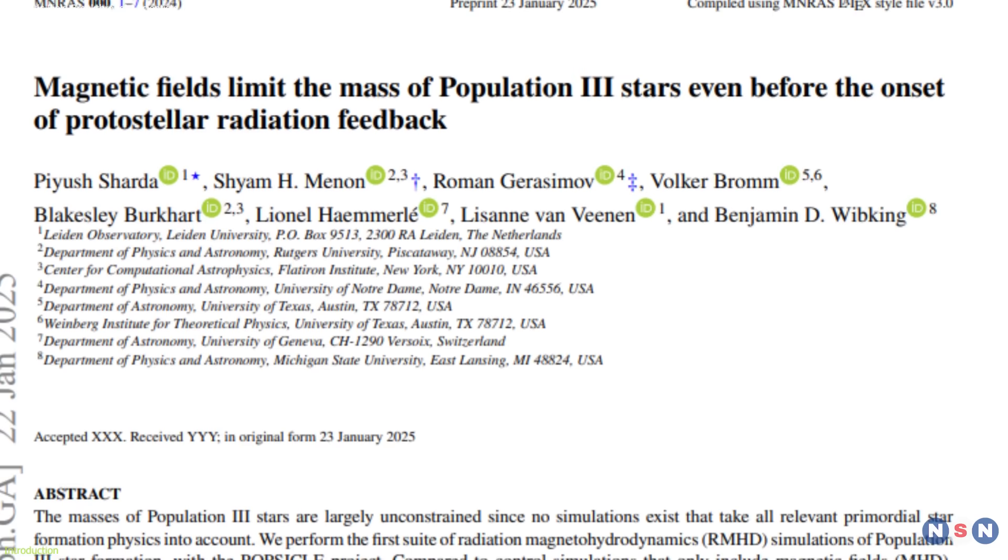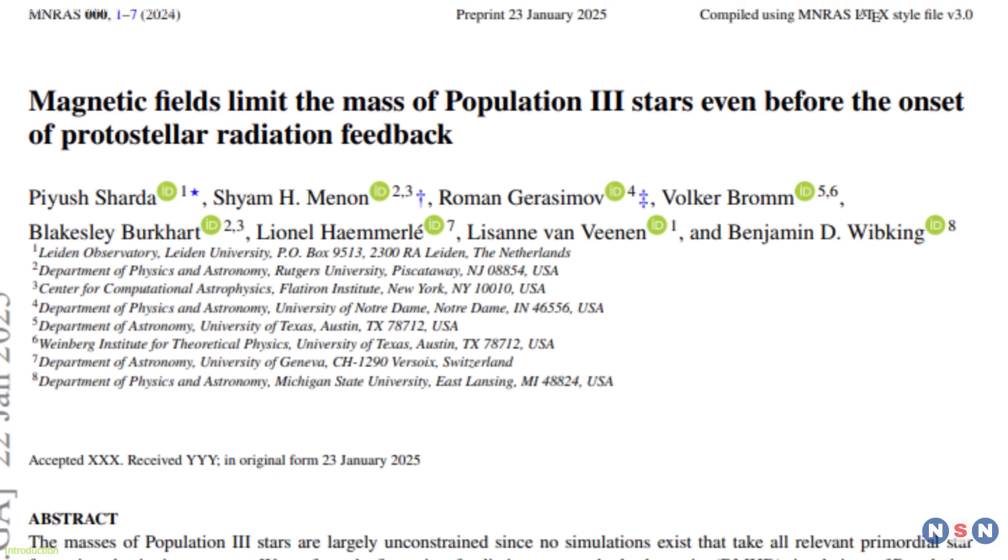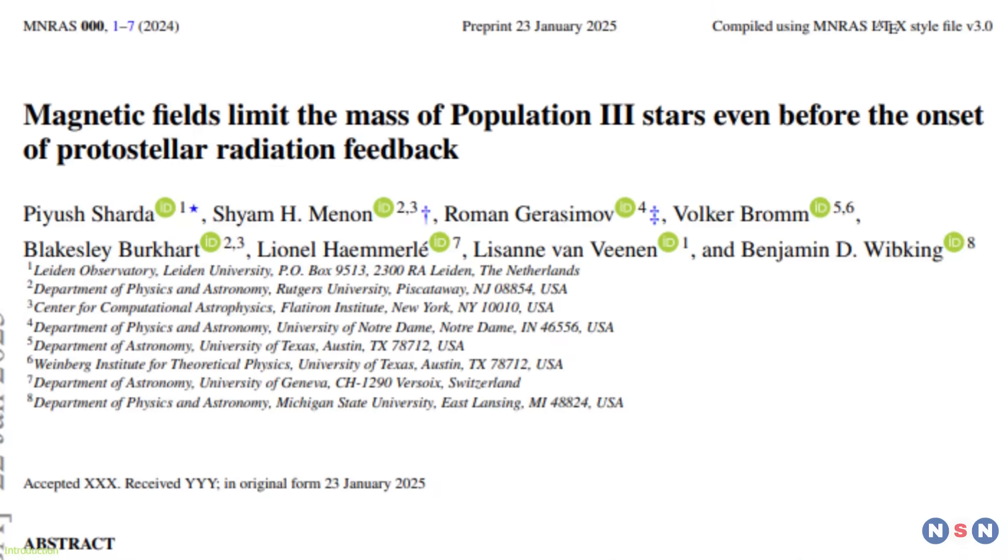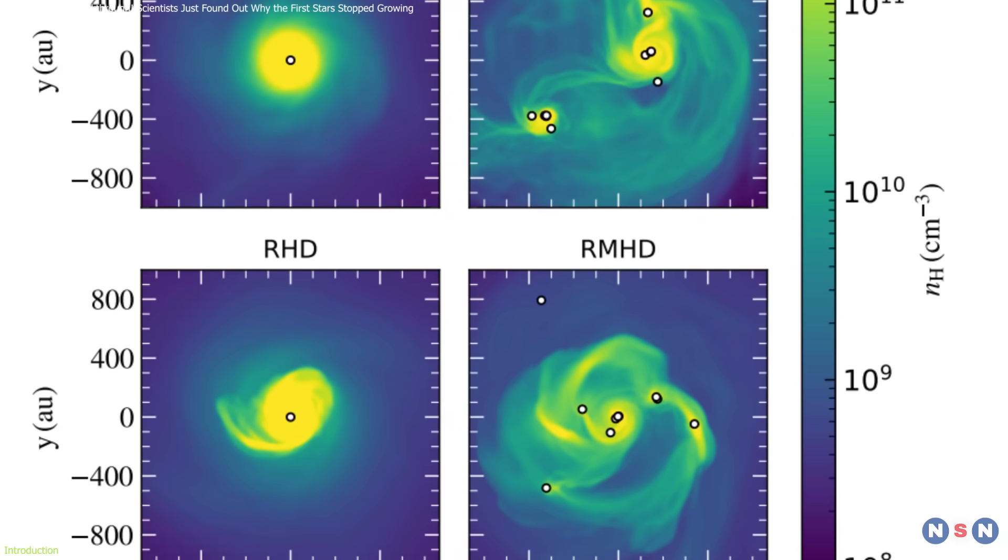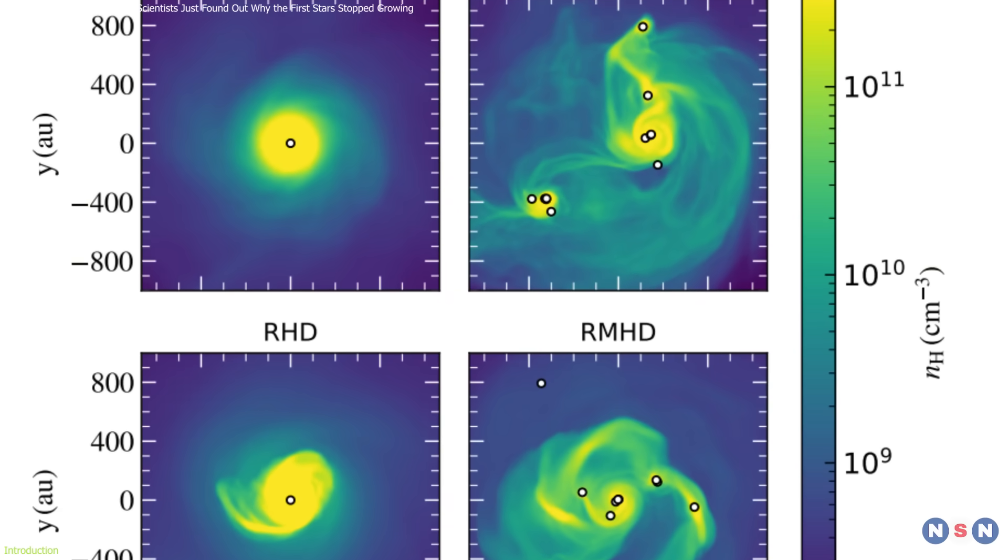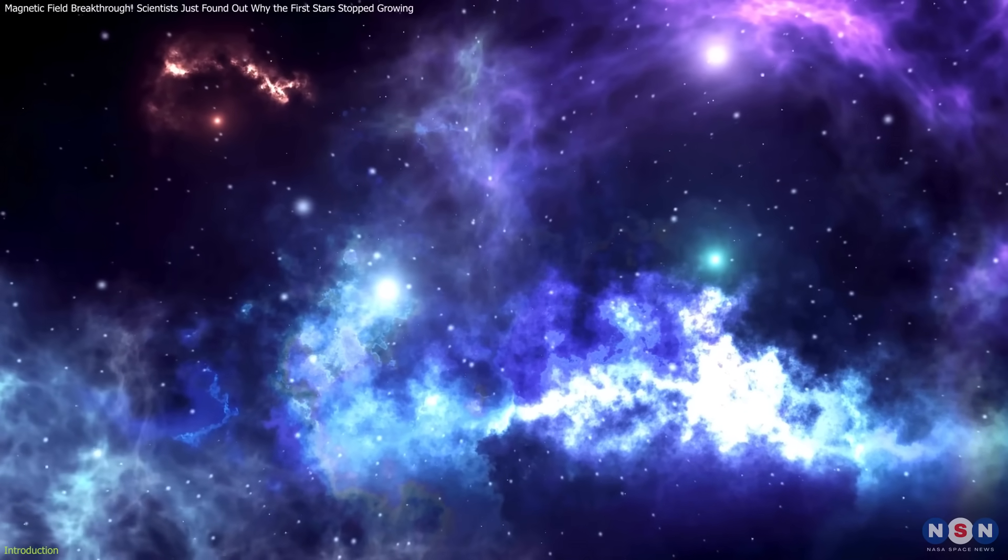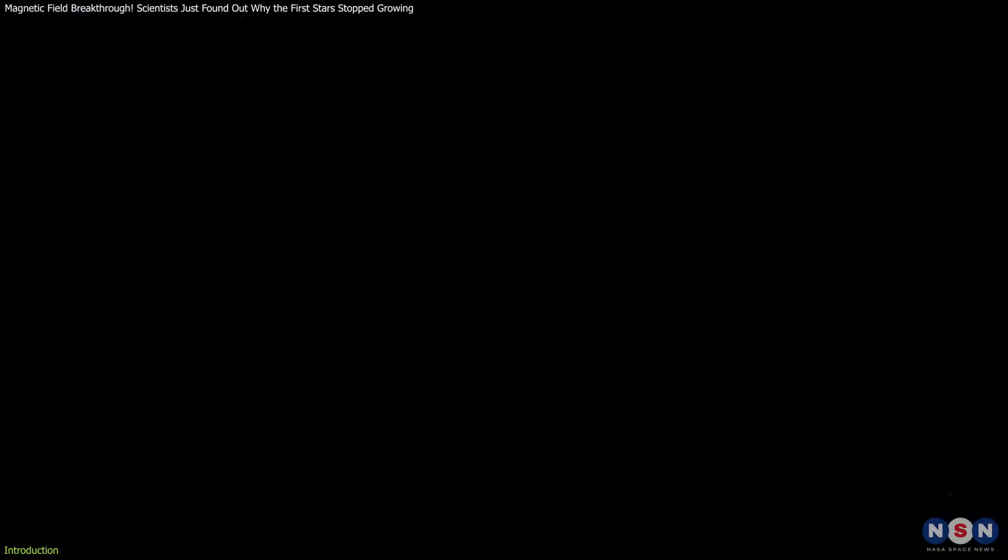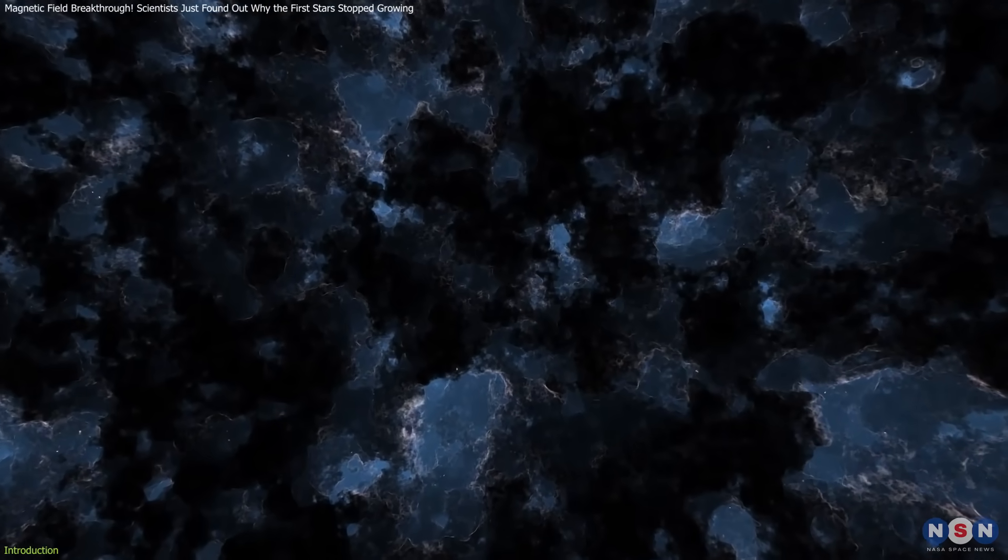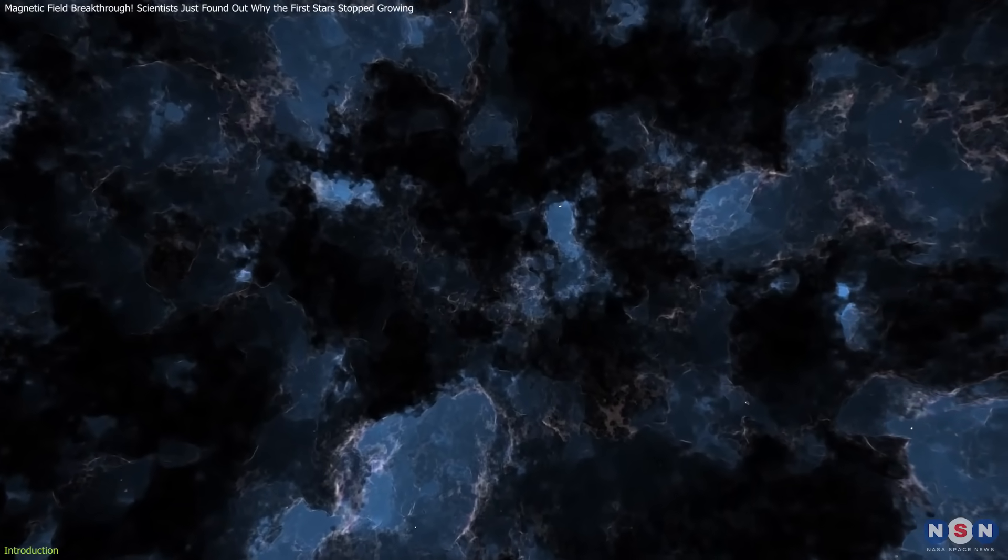However, a recent study led by Piyush Sharda at Leiden Observatory has revealed that magnetic fields played a crucial role in limiting their growth, even before radiative feedback could take effect. This groundbreaking discovery changes our understanding of early star formation, offering new insights into how the universe's first light sources shaped the cosmos.